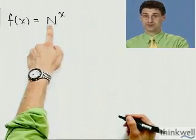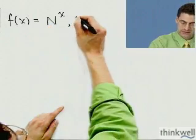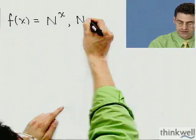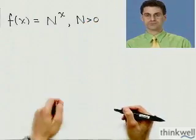So let me say f(x) = N^x, where N could be 2, could be 3. That's a number now, not a variable, but it's fixed. And remember, that number has to be bigger than 0, otherwise we can't talk about this function.